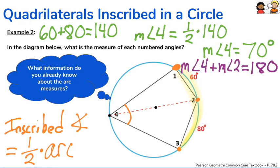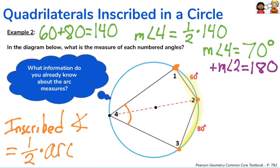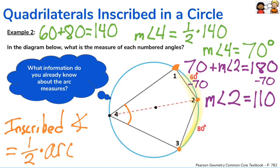We can also figure out the measurement of the other angles. Using what we talked about on the previous slide, angle four and angle two are across from one another, so if we add them together we should get 180 degrees — they are supplementary. The measure of angle four is 70 degrees, so to find angle two we subtract 70 from 180, giving us 110 degrees.